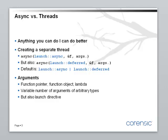The default, when you don't specify this argument, is an OR of async and deferred, which means that the system is free to pick whatever is more convenient. The arguments to async are more or less the same as for a thread constructor — you pass it a function pointer, function object, callable object, or a lambda, then a variable number of arguments of arbitrary types. These types are checked against the argument types of the function you're calling, so this is type safe.